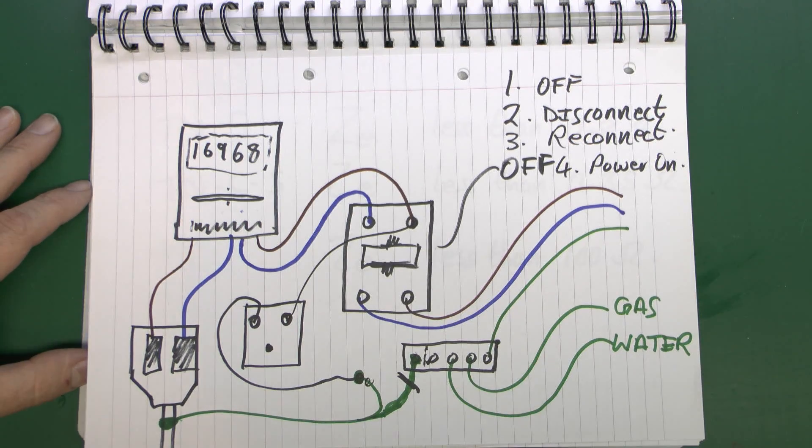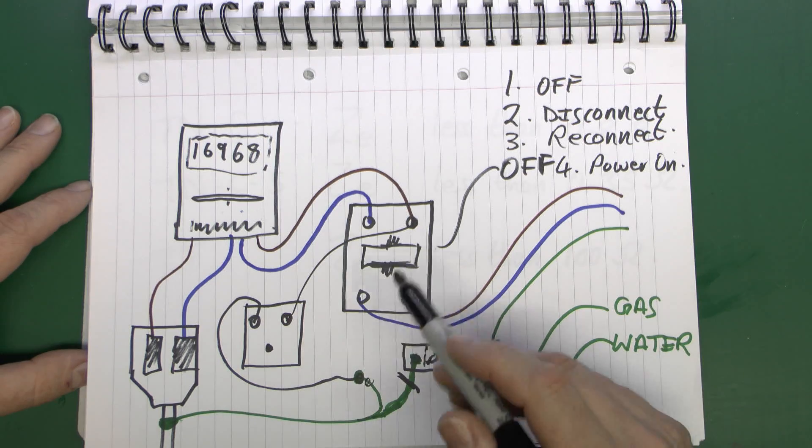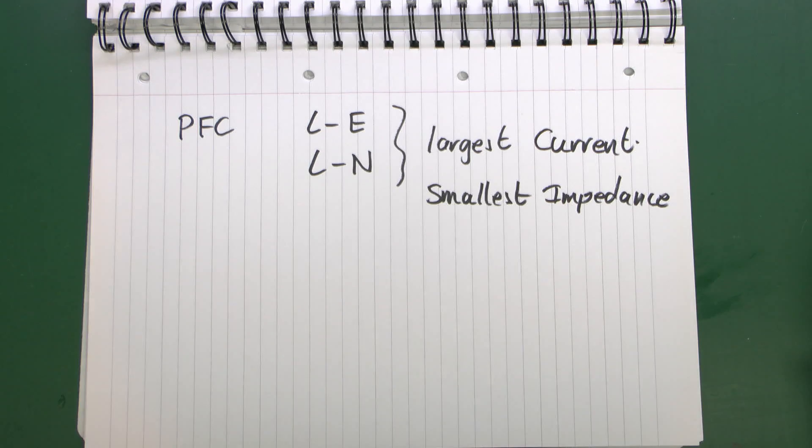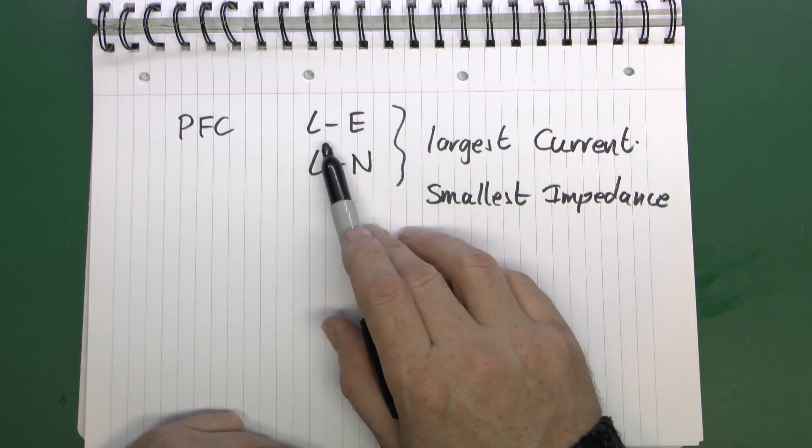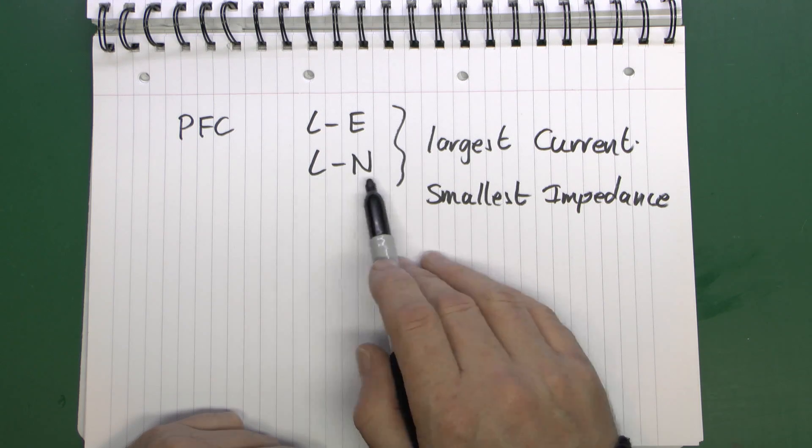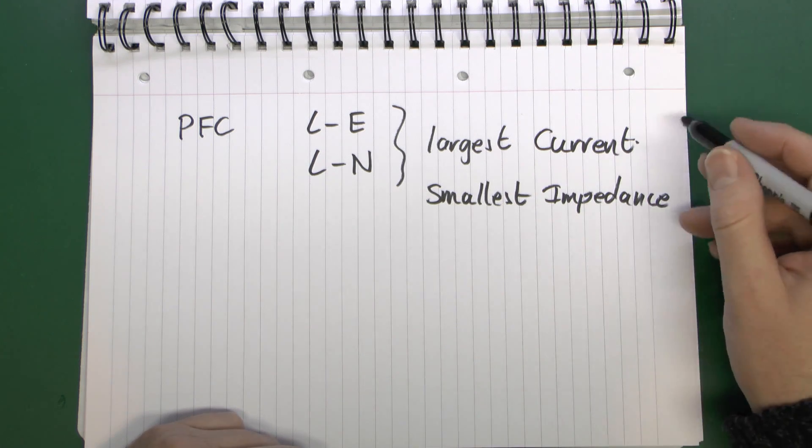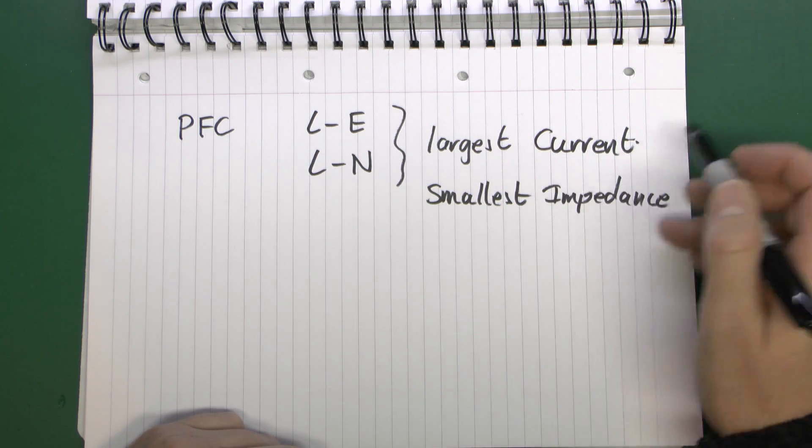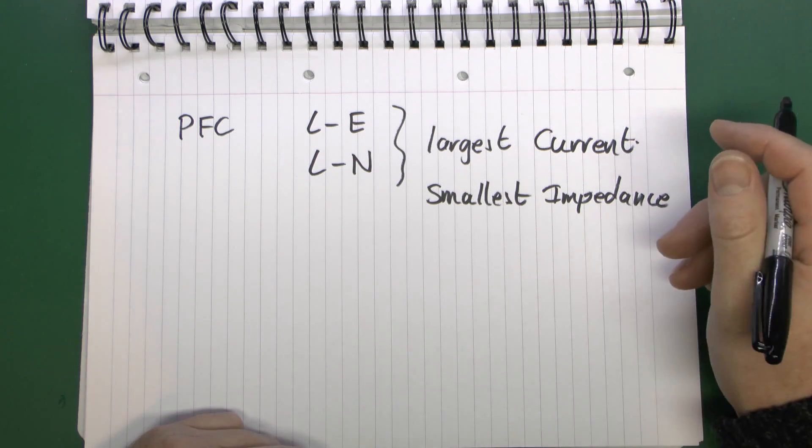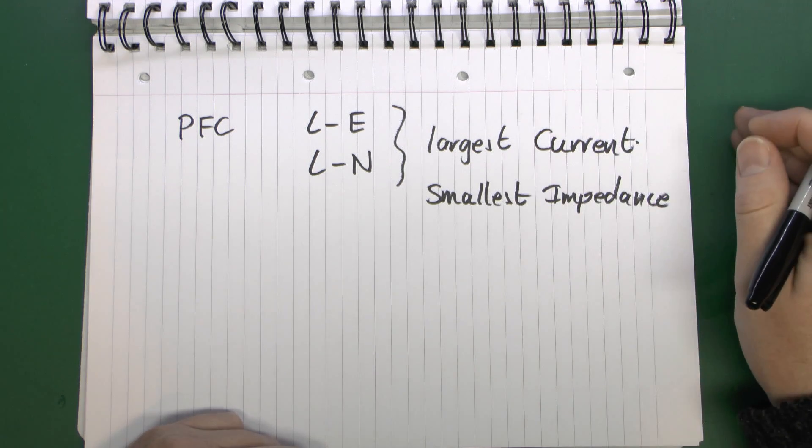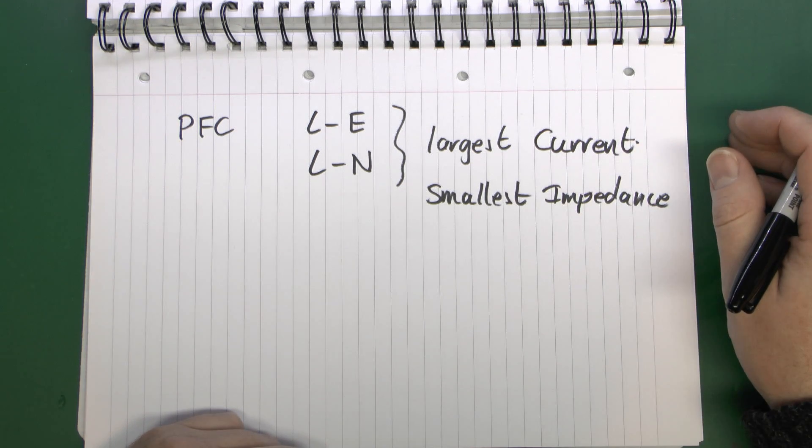So as well as testing there, you do need to once you've done this, test between the line and neutral, and whichever value is highest for the fault current is the one that you would record. So in terms of the prospective fault current, you would test between the line and earth, and then also between the line and neutral, and whichever came up to be the largest current, and of course that would also mean the smallest impedance, would be the value you would record for the prospective fault current. And say on the TNCS system you would expect those to be exactly the same because you're testing the same cable, but on other systems there will be considerable variance in that.